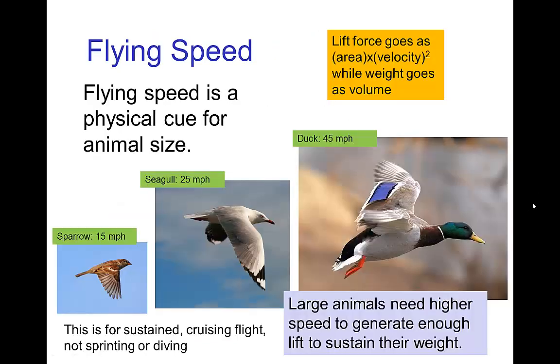For birds, birds require certain flight speed in order to have enough lift to stay up. Because the lift force depends on the area and the amount that they need depends on their weight, larger birds have a higher flight speed than small birds. In terms of miles per hour, something larger like a duck has to fly faster than something small like a sparrow simply to get enough lift in order to support its weight.